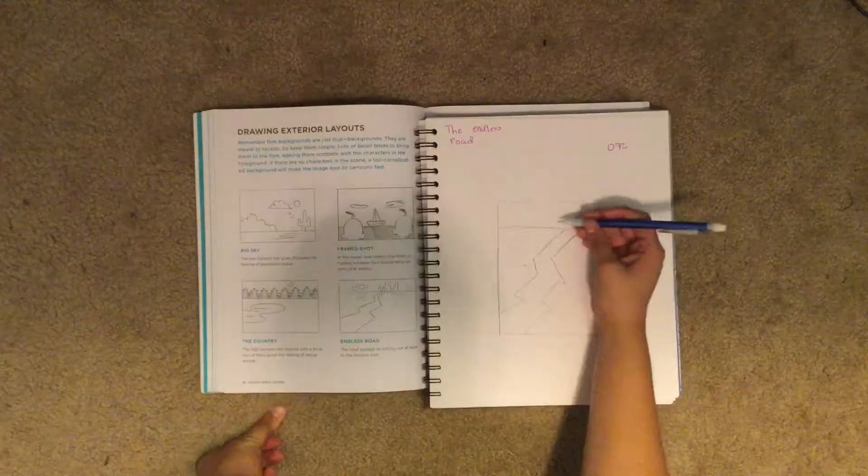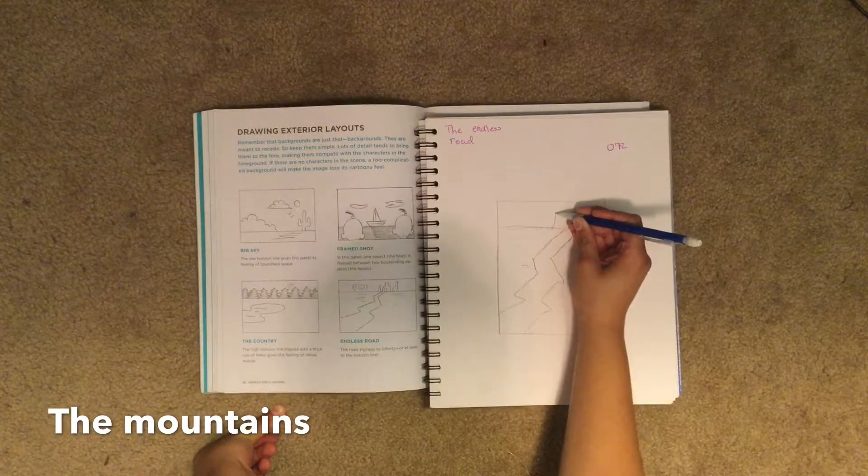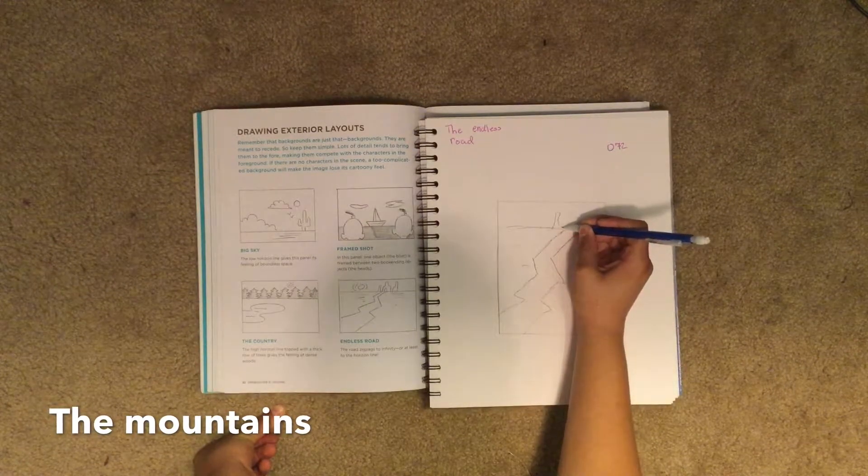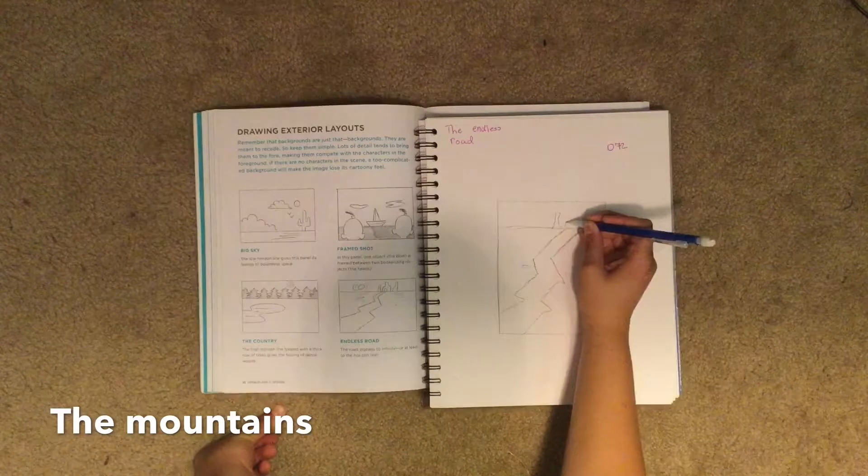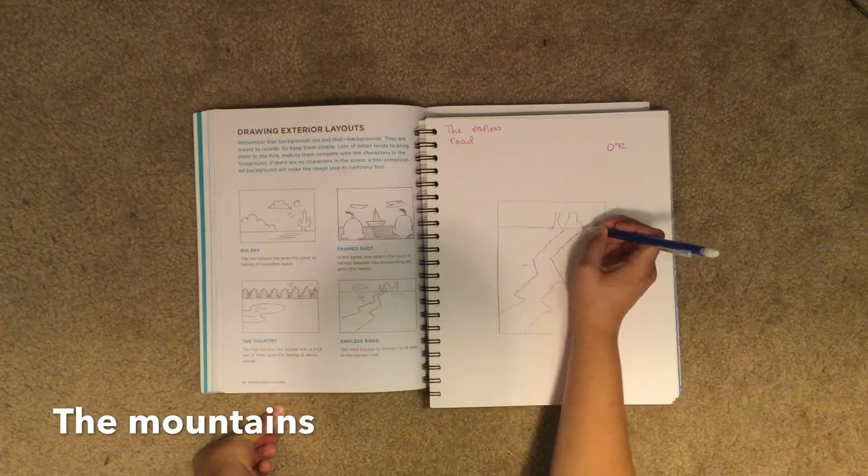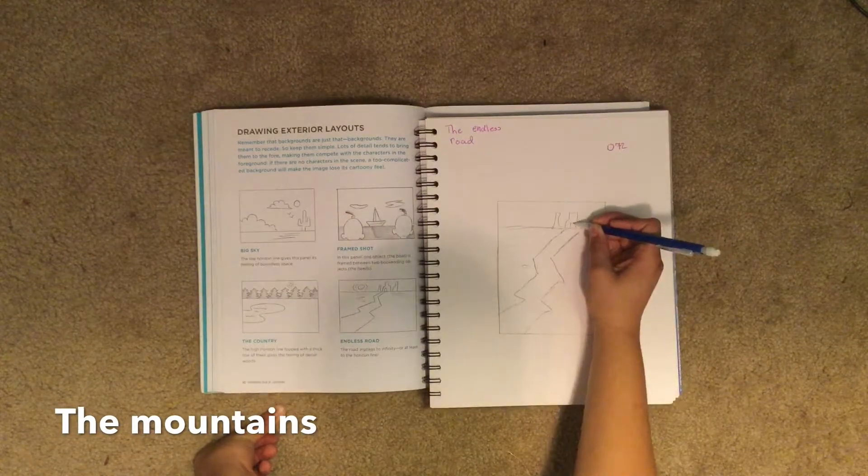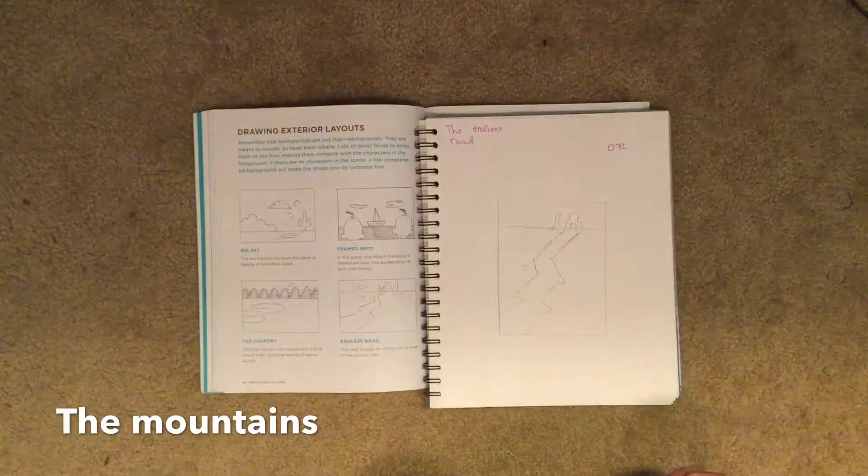Next, we're going to draw a mountain, or some mountains that come up, and we make a little archway so that the cars can get through it.